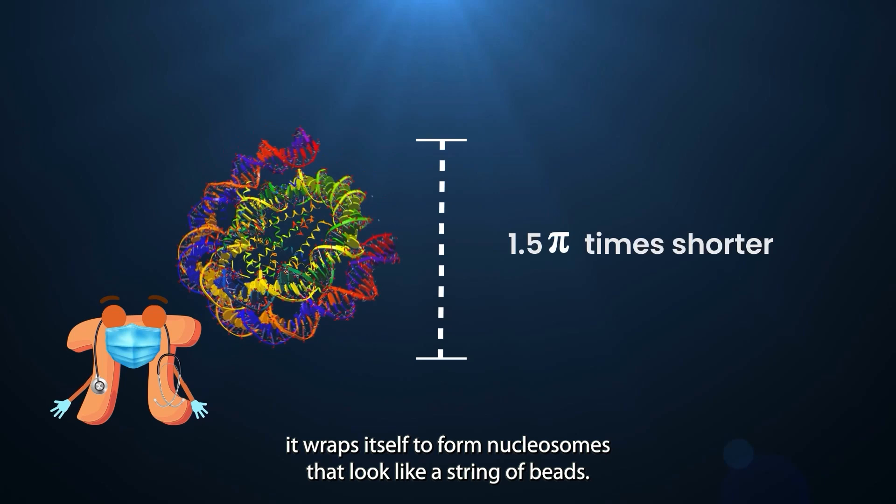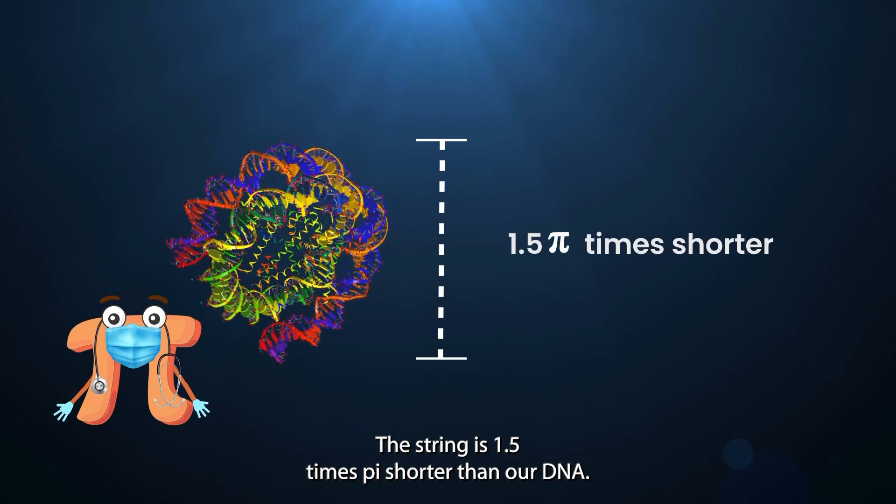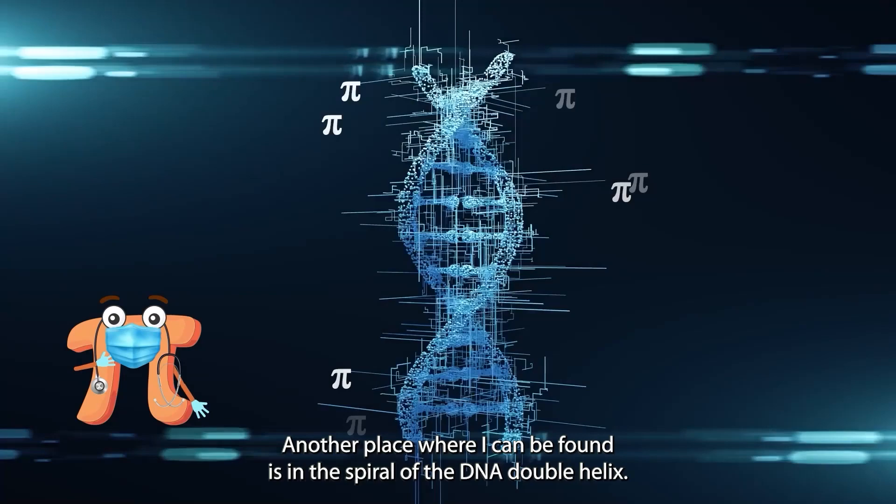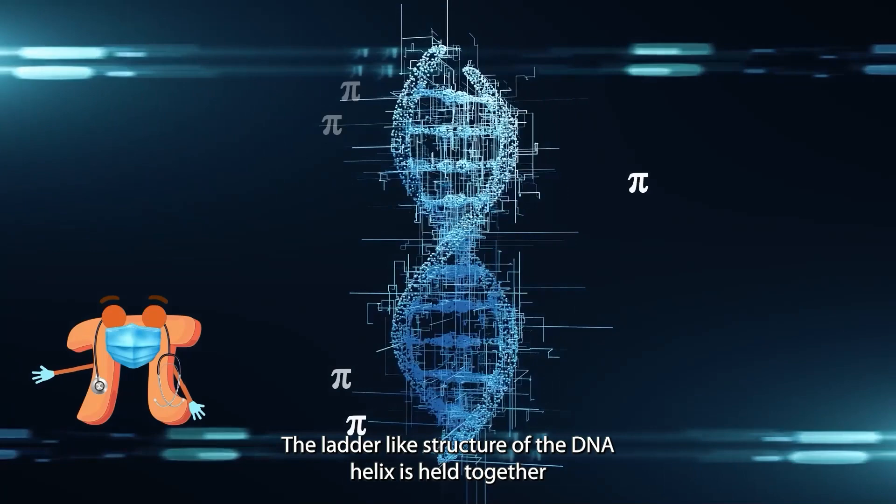The string is 1.5 times pi shorter than our DNA. Another place where I can be found is in the spiral of the DNA double helix. The ladder-like structure of the DNA helix is held together with the help of pi. Pi base stack interactions that help to keep the structure in place.